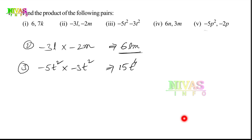In algebra, when we multiply same bases we add the exponents. So square into square gives exponent 4. For example, square into 1 gives cube — that is exponent 3. This gives us good practice with exponent rules.